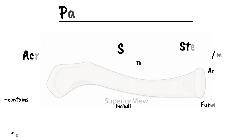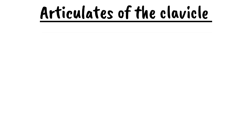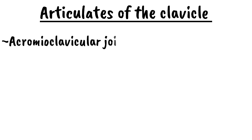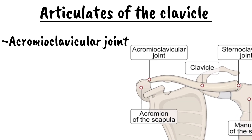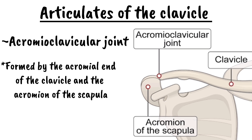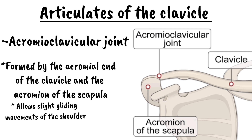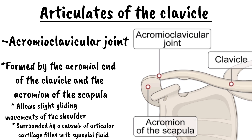The clavicle forms two synovial diarthrosis joints due to its shape and position. The first is the acromioclavicular joint, formed by the acromial end of the clavicle and the acromion of the scapula. It allows slight gliding movement along the shoulder and is surrounded by a capsule of articular cartilage fed with synovial fluid — it is a synovial joint.